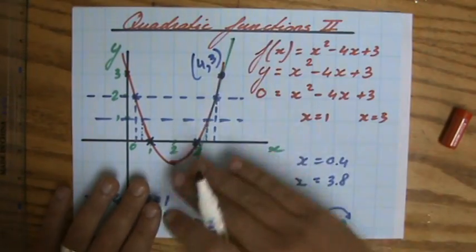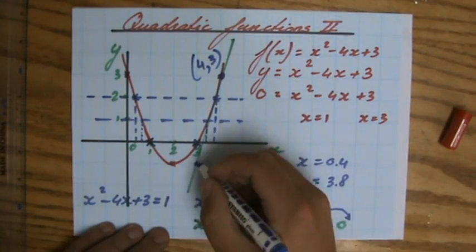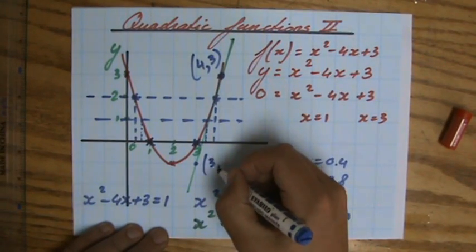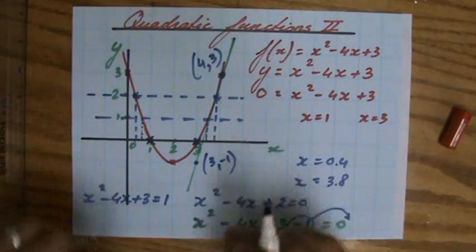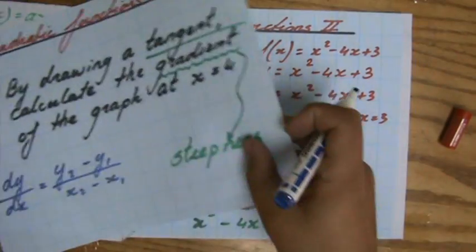And I'm just looking for any other good coordinates, which I can find. This one, for instance, is also on an intersection point. It's a 3 minus 1. So I've got my two coordinates of my tangent, and I'm going to use those to calculate the gradient.